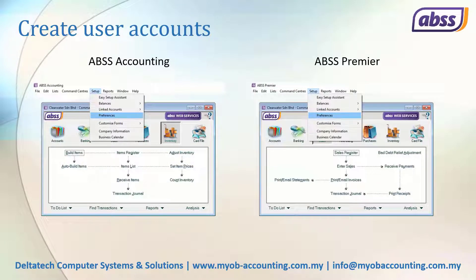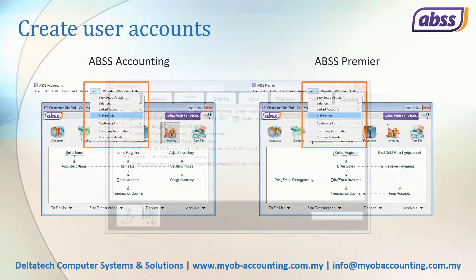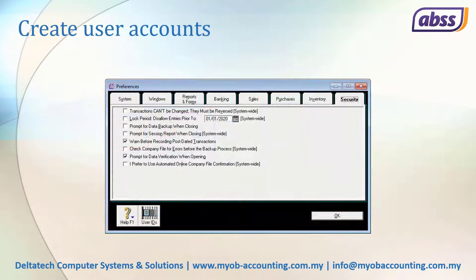When you have opened your file, click on Setup from the menu at the top, then click on Preferences. In the Preferences window, select the Security tab, then click on the User IDs button at the bottom left.